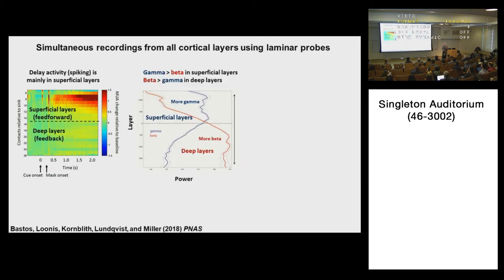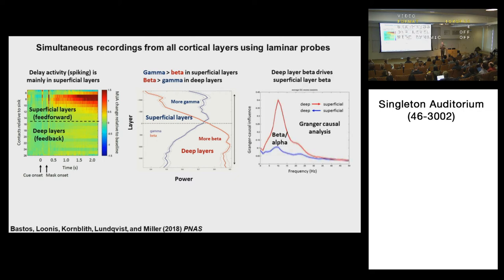Next we examined the beta and gamma rhythms. With power on the x-axis and cortical layer on the y-axis, we found that gamma was stronger in the superficial layers and beta was stronger in the deep layers. This makes sense: if gamma is associated with encoding bottom-up information in working memory, it should be in the superficial feed-forward layers. And if beta is carrying top-down information from the front to the back of the brain, it should be in the deep feedback layers of cortex. We then applied a Granger causality measure to look at interactions between beta and gamma across layers — this looks at interactions between rhythms of the same type, going gamma-to-gamma and beta-to-beta.